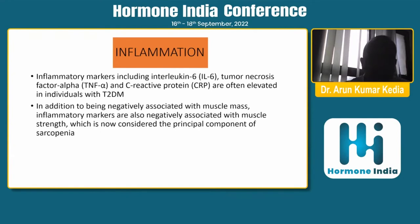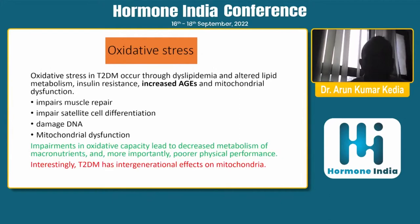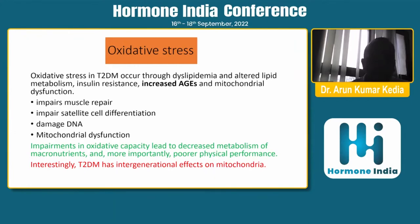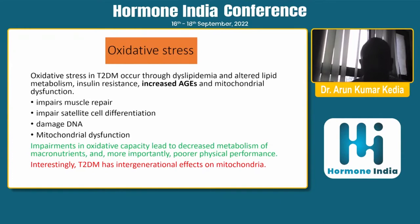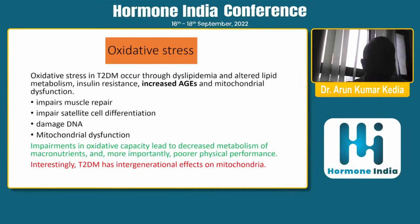I would emphasize again that sarcopenia is not just loss of muscle mass but also a decrease in muscle strength. Oxidative stress in type 2 diabetes — through dyslipidemia, insulin resistance, increased advanced glycation end products, and mitochondrial dysfunction — leads to impairment in muscle repair, satellite cell differentiation in myocytes, increased DNA damage, and mitochondrial dysfunction. This decreases oxidative capacity, impairs macronutrient metabolism, and leads to poor physical performance. Recent studies also show intergenerational effects: children born to diabetic patients have 30 to 40% fewer mitochondria than those born to non-diabetic patients.